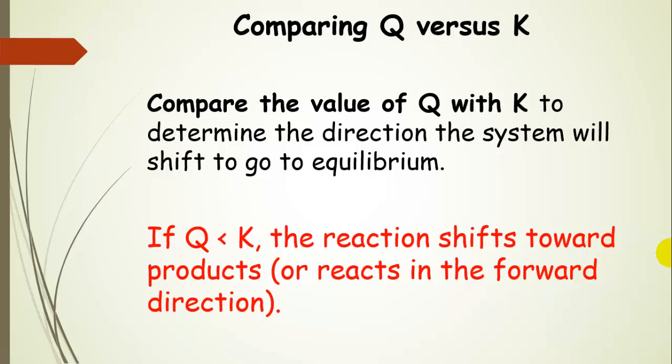So how do we compare those two values? We're going to compare the value for Q that we calculate at some time with the value of the equilibrium constant. And then we can use that information to figure out which way the system will shift, or the reaction will shift, to go to equilibrium, if it's not there already.